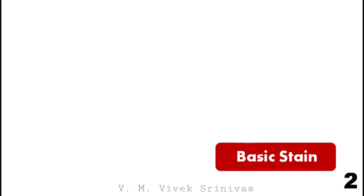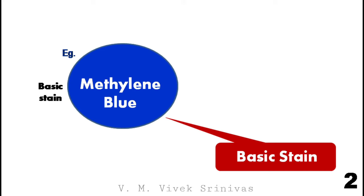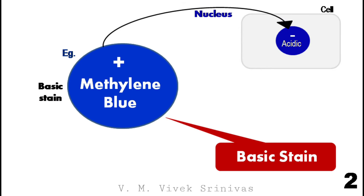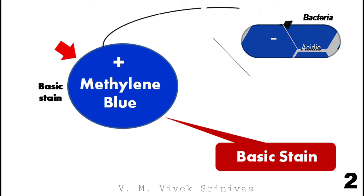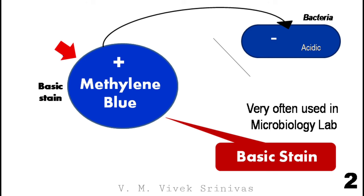Next, the basic stain. The example is methylene blue. Methylene blue is a basic stain and is positively charged, having high affinity for the acidic components — that is, the negatively charged structures of the cell, like the nucleus. Importantly, microorganisms like bacteria have mostly acidic components, that is, they are negatively charged. So they have high affinity for the basic stain — the positively charged stains like methylene blue. So these basic stains are often used in the microbiology laboratory.